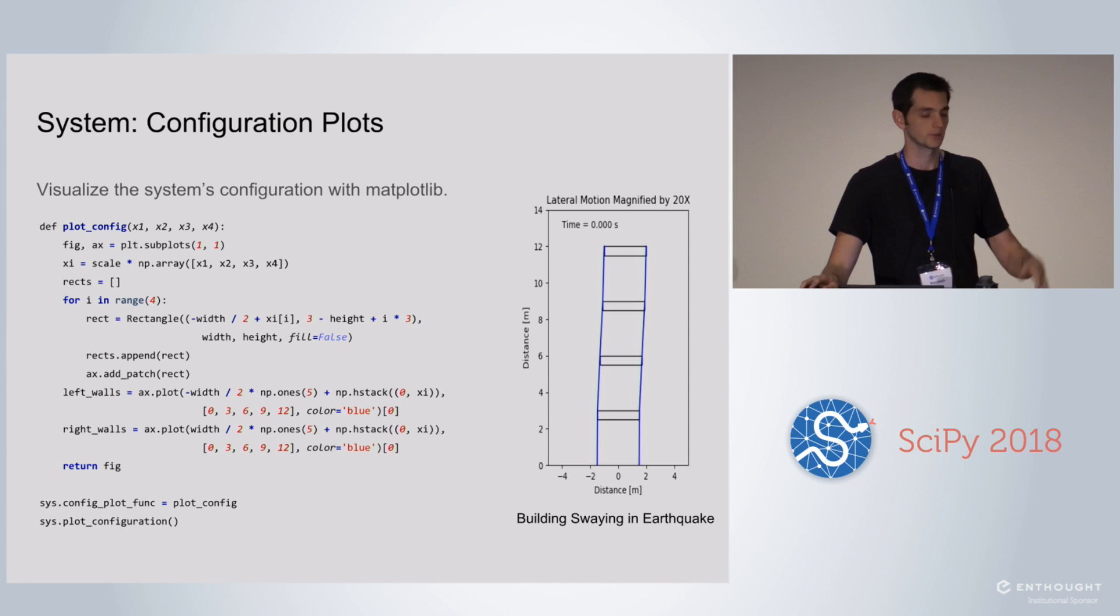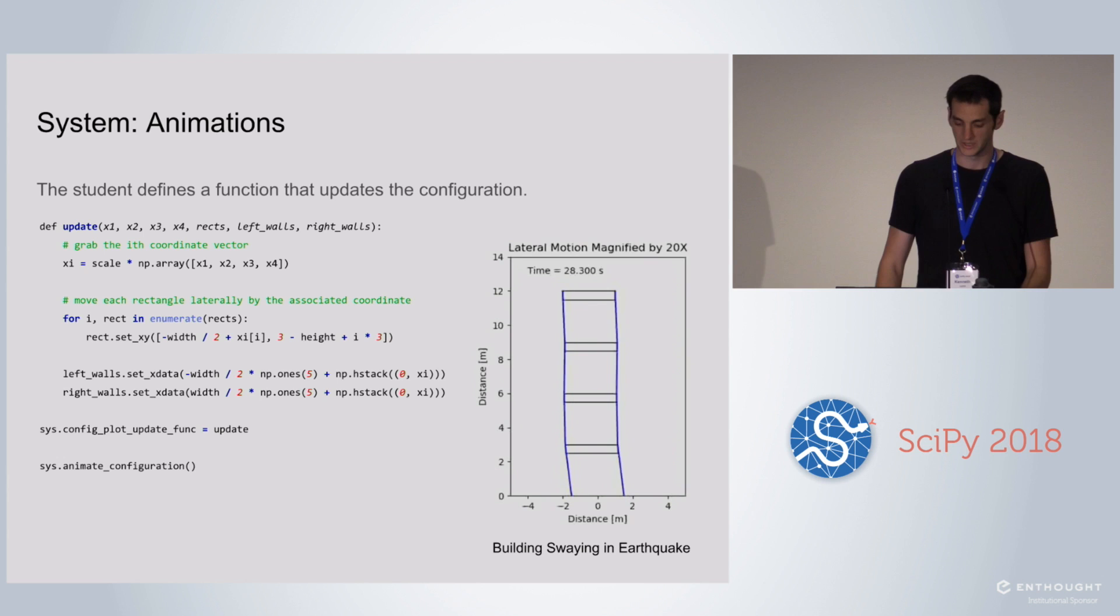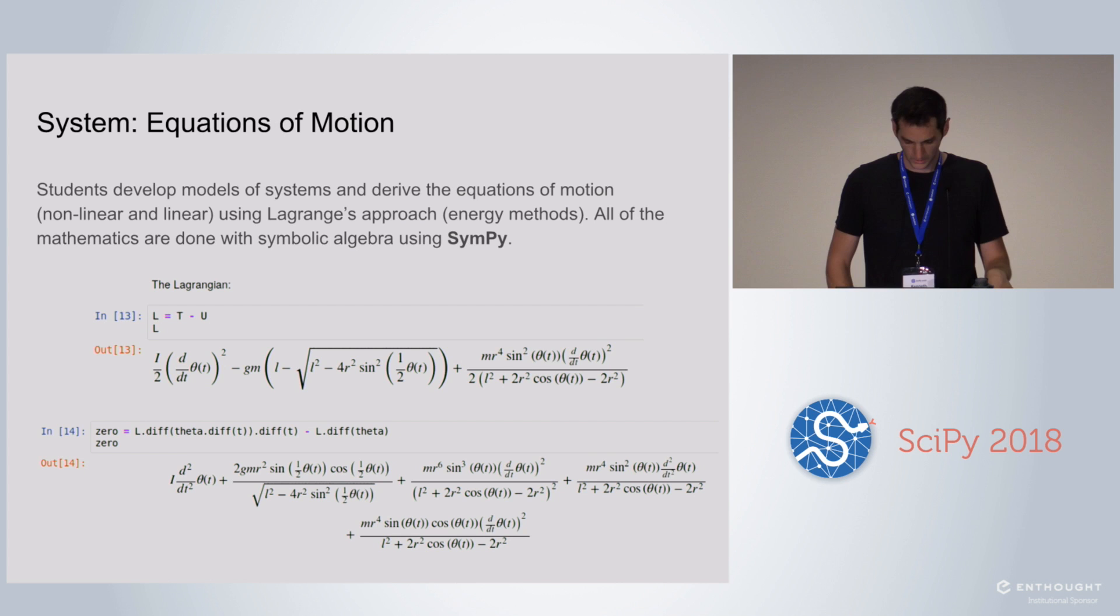Another thing you can do with systems is create configuration plots, as we call them. You can essentially create a callback function that generates a matplotlib figure. Students didn't really get into the whole matplotlib API to do a lot of this, but we were able to create some of these for the built-in systems. We also showed them how to modify them if they wanted to. You can create a configuration plot that displays the physical thing in a plot. After you do that, you can write another function that updates the plot once you get new coordinates, and so you can create little animations of the systems. This can be pretty useful to look at and just see, because you can get trajectories of the state variables, but it's sometimes a little bit harder to visualize or imagine what that might look like. Visualizing it is an interesting way to bring that in, and we can do it relatively simply with not that much code.